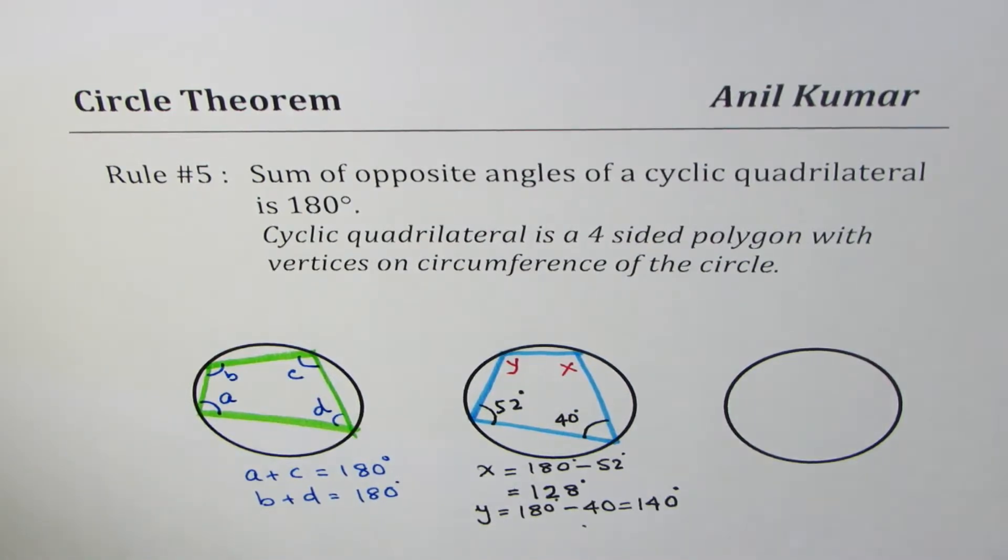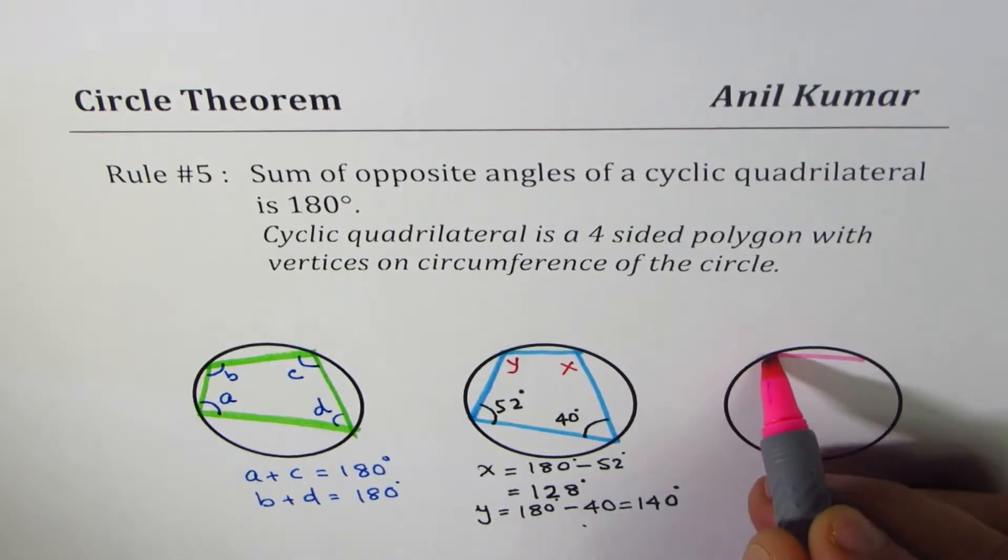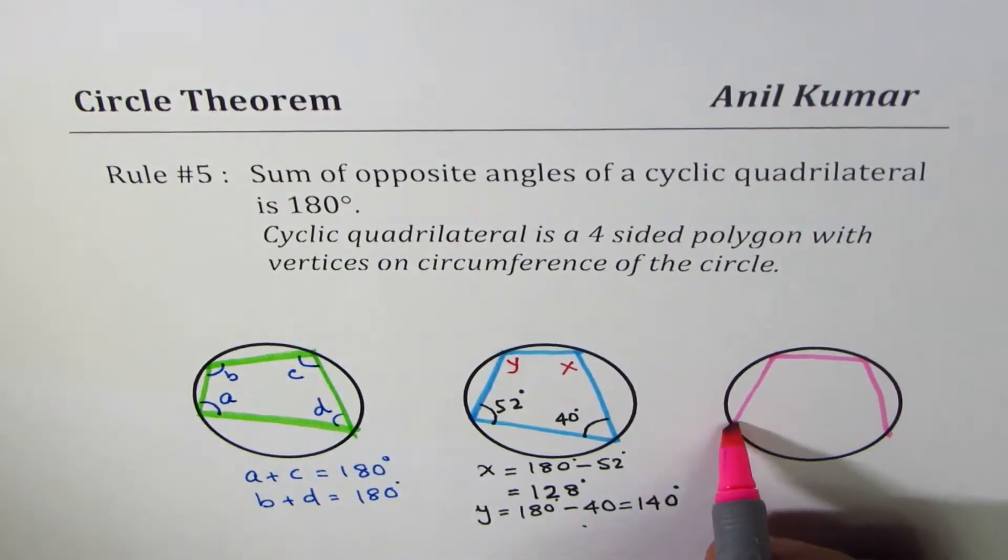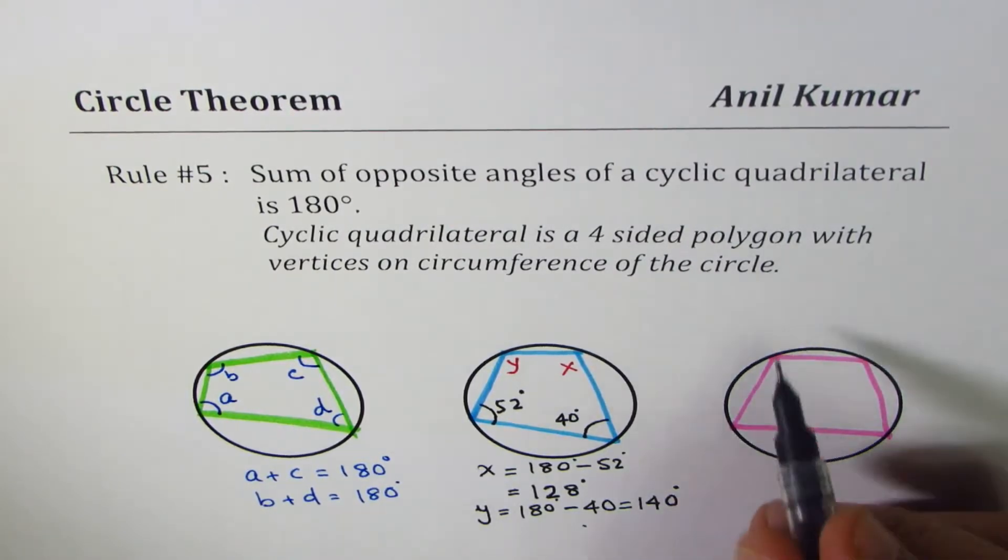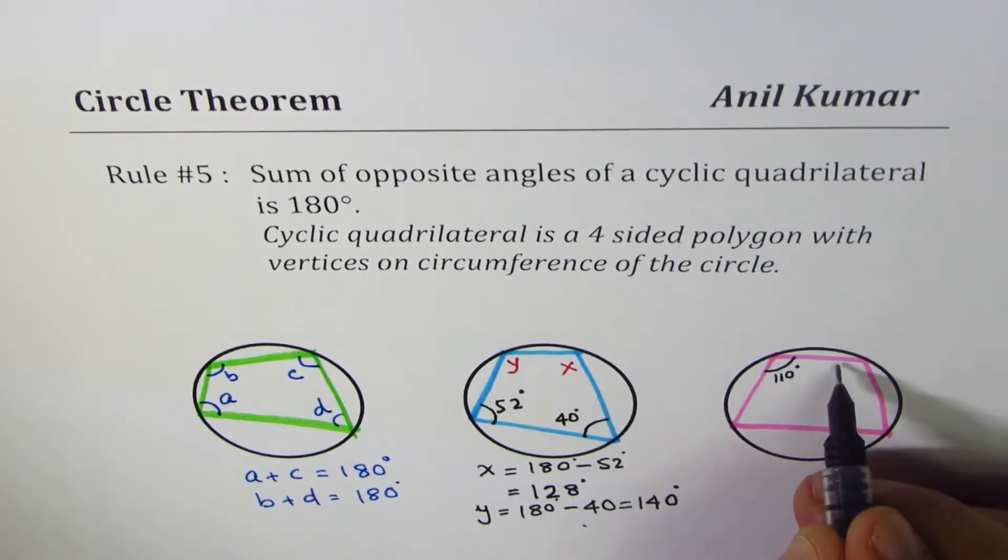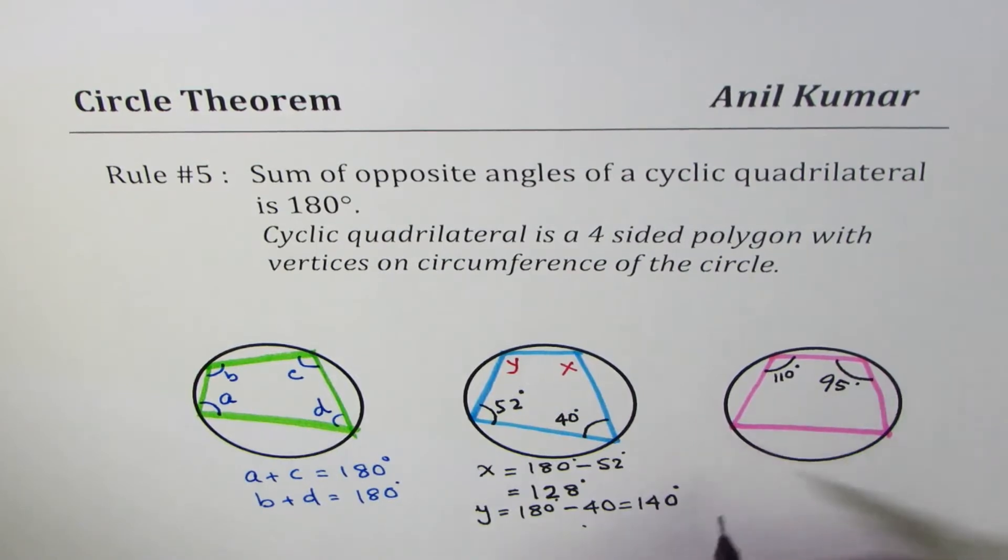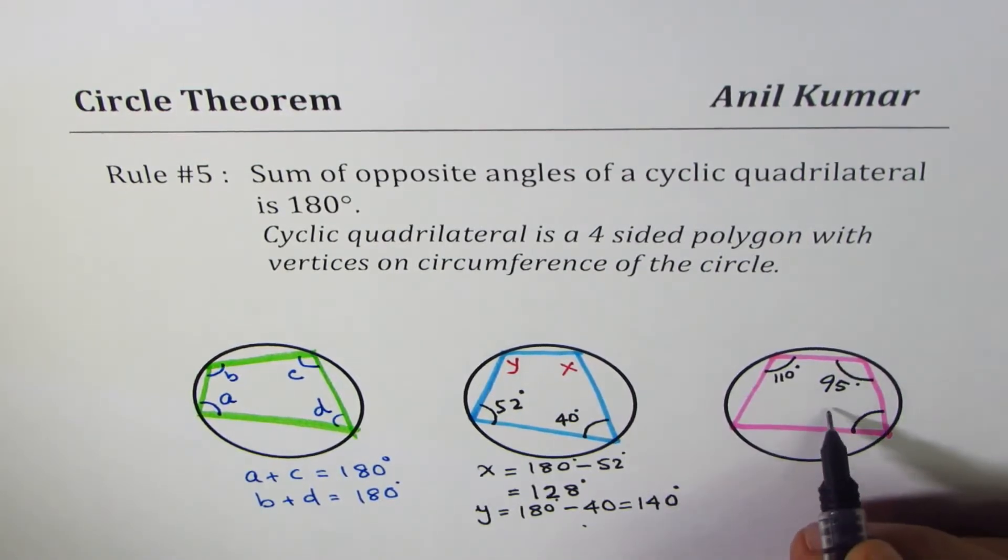Now let's take an example here. Okay, so here's another example for you. Let's say we make a quadrilateral here, and if I give you some angles, for example let's say this is 110 degrees, and this angle is 95 degrees, and let's say this angle is 75 degrees.